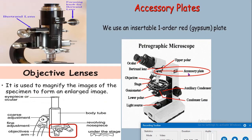The accessory plate or accessory opening is present directly below the analyzer, through which a quartz wedge, gypsum plate, and other plates may be inserted into the light path. The objective lenses used for mineralogical work are low power (2x), medium power (10x), or high power (50x). The objective lens is the critical component of the microscope used for two basic functions: magnification and resolution.